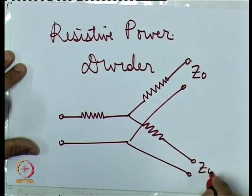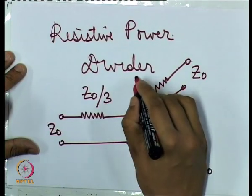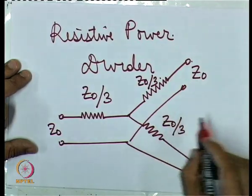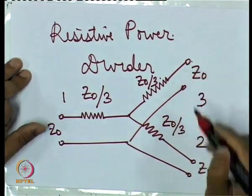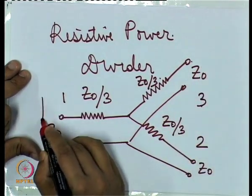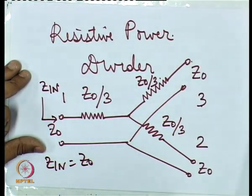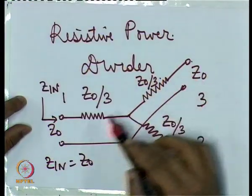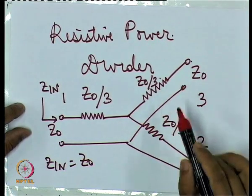Z0 is the characteristic impedance at all three ports, and we have three resistances each of value Z0/3. You can verify that if a load Z0 is connected to each port — calling them port 1, port 2, and port 3 — the input impedance Zin will equal Z0, and that is true for all the other ports as well. This kind of implementation achieves power division and is very simple. A signal entering port 1 will be equally divided between ports 2 and 3, or by suitably adjusting the resistances we can set the division ratio.